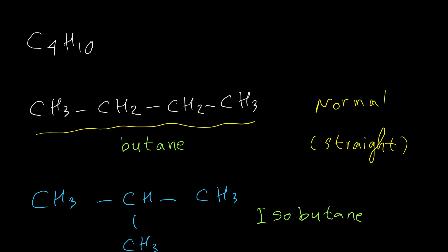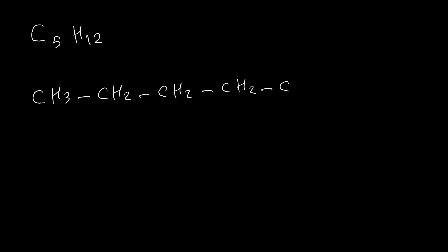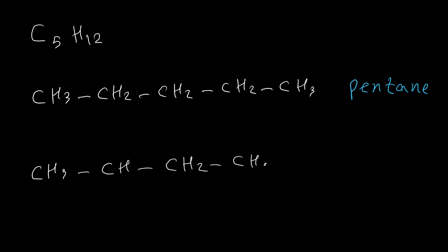So there are two different possibilities for C4H10. Let's see the structures for pentane, C5H12. The first structure is the normal alkane: CH3-CH2-CH2-CH2-CH3, named pentane. For the second one, we have four carbons in the chain and the fifth carbon as a branch — the name for this compound is isopentane.